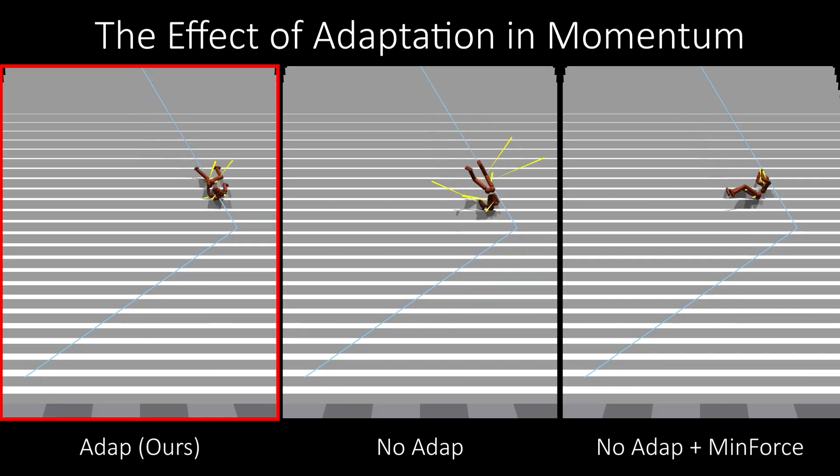Overall, our momentum adaptation method, without relying on minimizing terms, consistently produces physically realistic motions more efficiently than conventional artificial force methods.